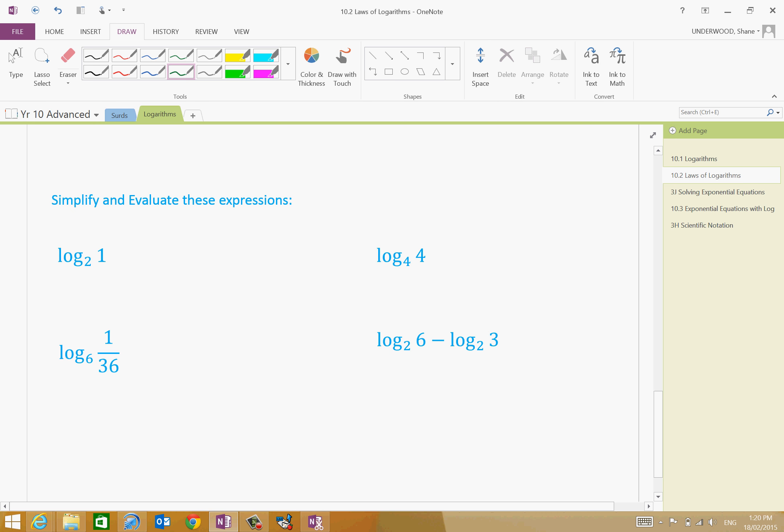Now, it says simplify and evaluate these expressions. 2 to the power of something equals 1. What is that something? Zero. So, therefore, we're evaluating that and this is what we were doing last class.